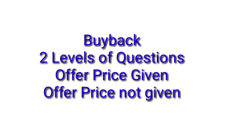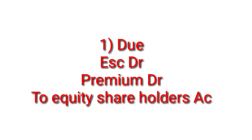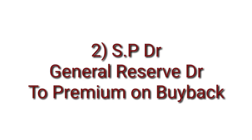Now for the journal entries — Entry 1 is the due entry: Equity Share Capital Account debit, Premium on Buyback of Equity Shares Account debit, to Equity Shareholders Account. This is your first fixed entry.